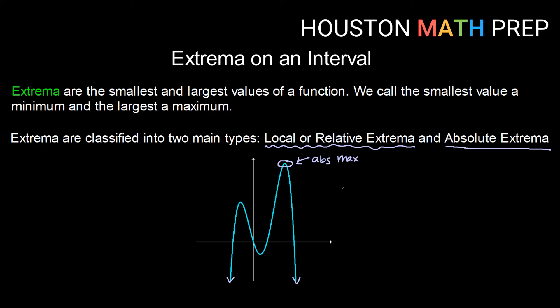If we think about an absolute minimum — the smallest y value achieved over the entire domain — we would see that because this function continues down indefinitely, we don't have a smallest y value. So we would not have an absolute minimum.